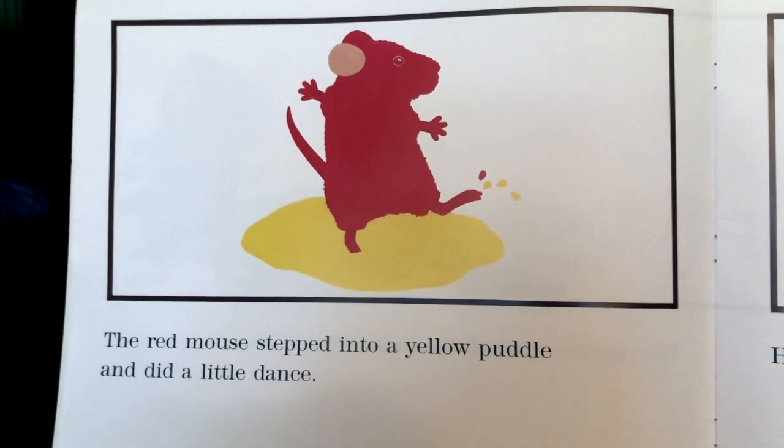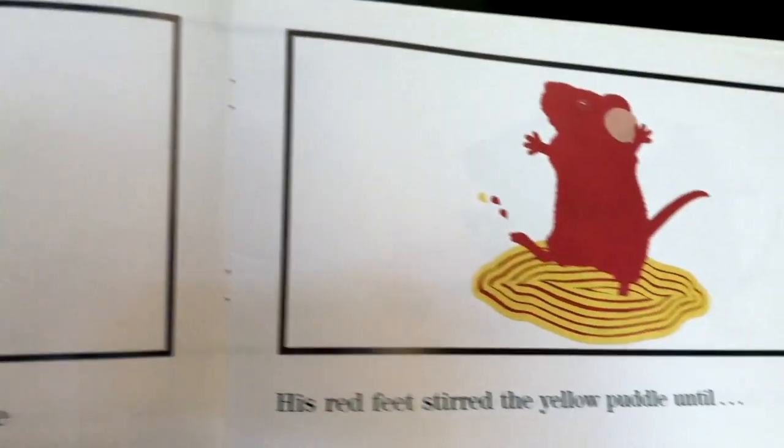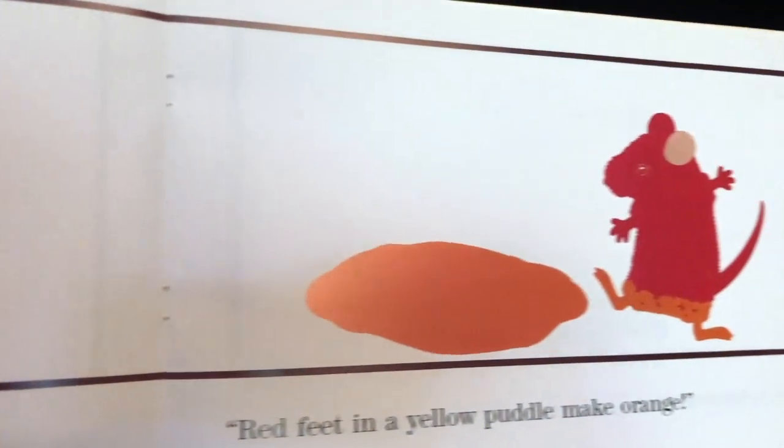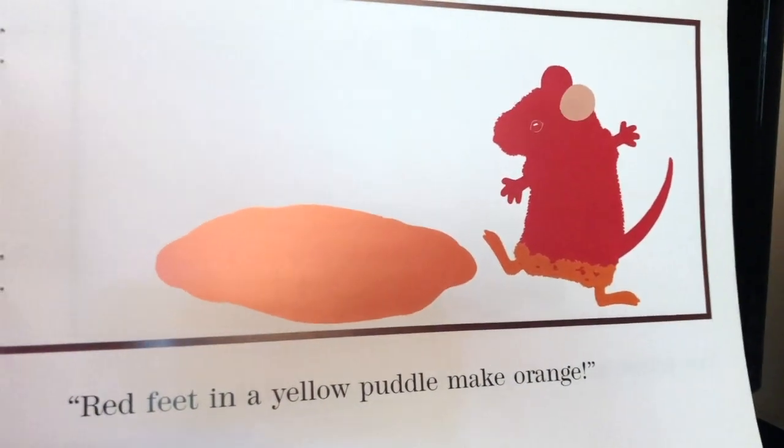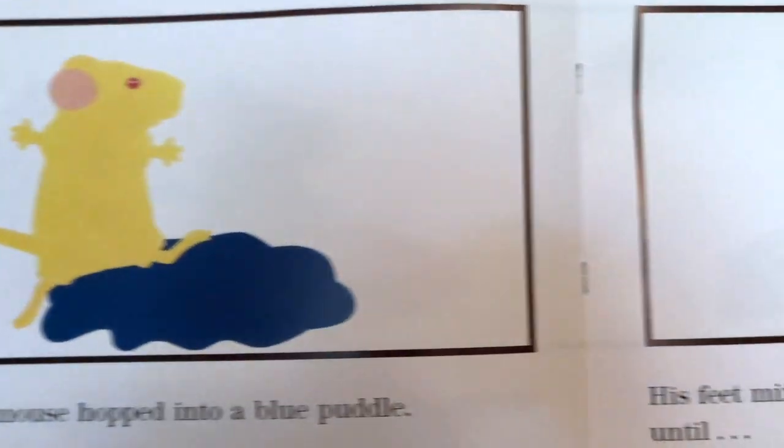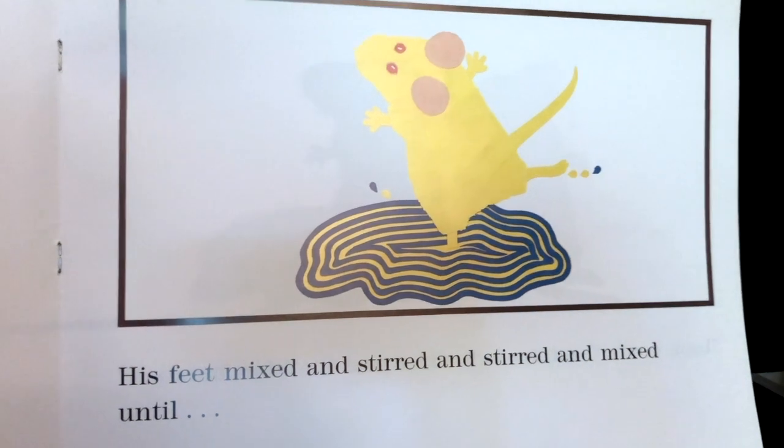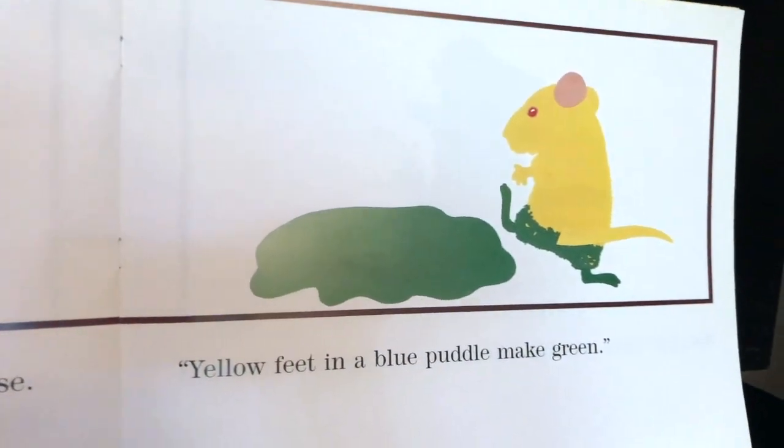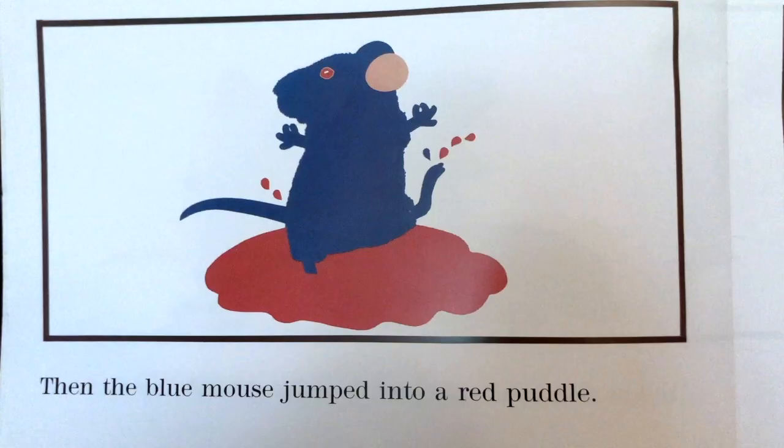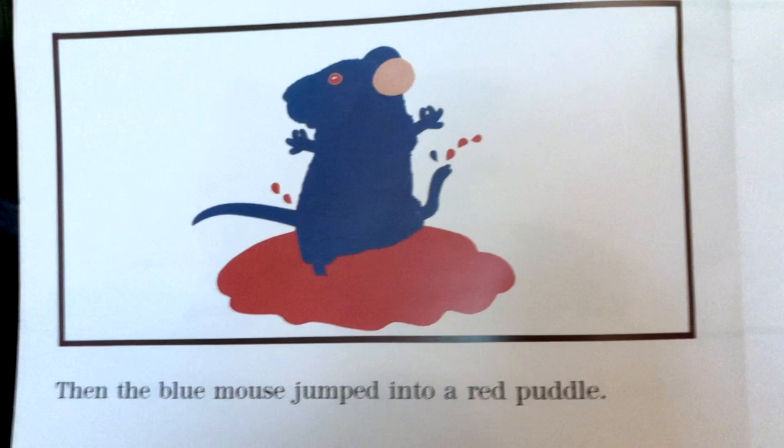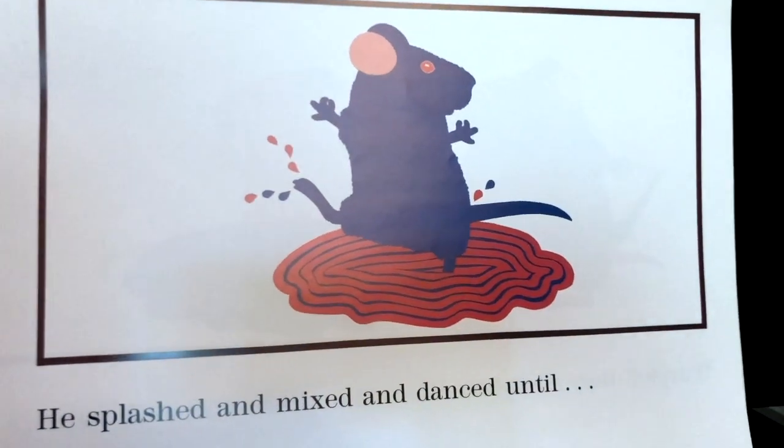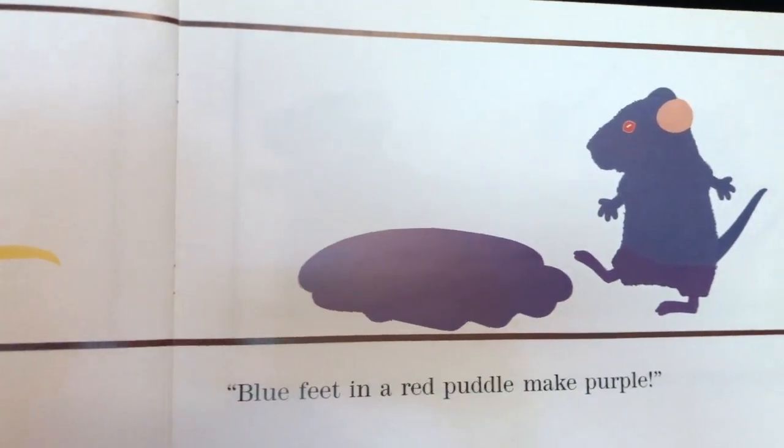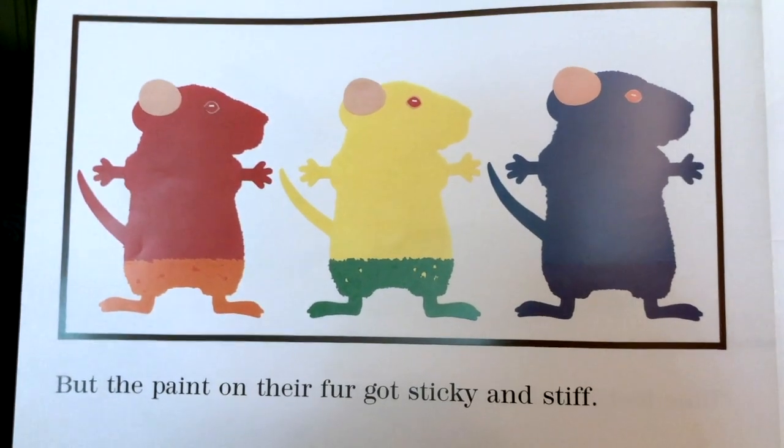The red mouse stepped into a yellow puddle and did a little dance. His red feet stirred the yellow puddle until, look, he cried. Red feet in a yellow puddle make orange. The yellow mouse hopped into a blue puddle. His feet mixed and stirred and stirred and mixed until, yellow feet in a blue puddle make green. Then the blue mouse jumped into a red puddle. He splashed and mixed and danced until, purple. Purple, they all shouted. Blue feet in a red puddle make purple. But the paint on their fur got sticky and stiff.